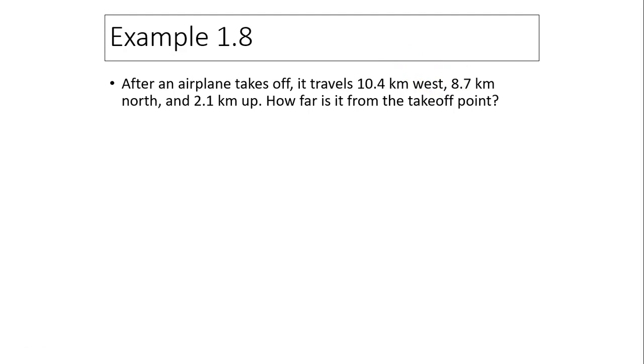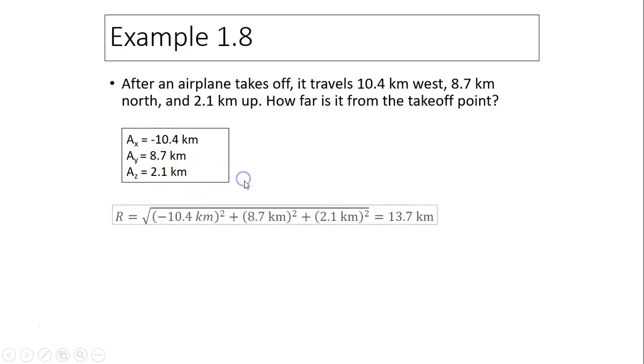Next example. After an airplane takes off, it travels 10.4 kilometers west, 8.7 kilometers north, and 2.1 kilometers up. How far is it from the takeoff point? How far means only the magnitude. So you have three vectors. Ax is negative because it's west, y going north is positive, and up is also positive. To find the resultant, use Pythagorean theorem. Add everything together, you should have 30.7 kilometers. Remember in the textbook or test, we use three sig figs.